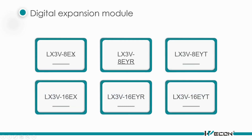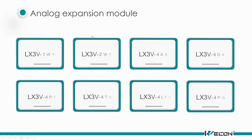Next, we'll talk about the POC expansion modules. There are EX and EY modules — EX means input expansion module and EY means output expansion module. R means relay and T means transistor. For analog expansion modules, we have the WT module (load cell), AD (analog-to-digital conversion), PT (temperature measuring), TC (thermocouple), and PG (high-speed output module). The naming rule: '4' means number of channels and 'AD' is the function code.